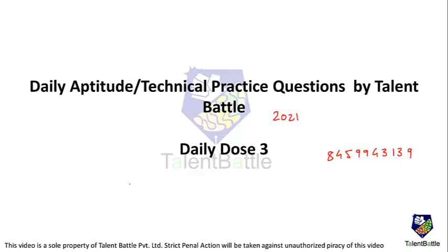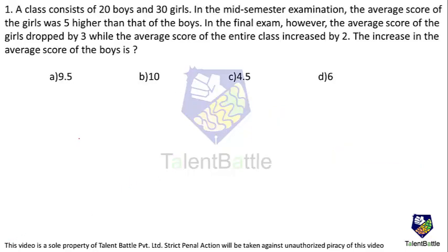In this video we are going to check the solutions for daily dose 3. Read this question: a class consists of 20 boys and 30 girls. In the mid-semester examination, the average score of the girls was 5 higher than that of the boys. In the final exam, the average score of the girls dropped by 3, while the average score of the entire class increased by 2. The increase in the average score of the boys is? Let's go step by step — it is not that difficult.